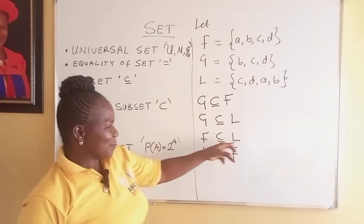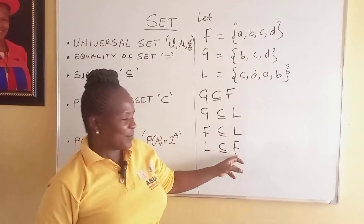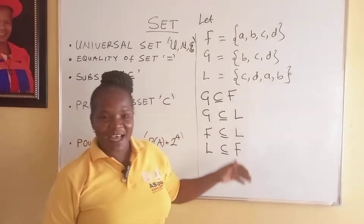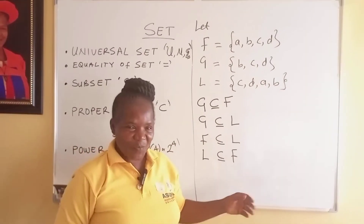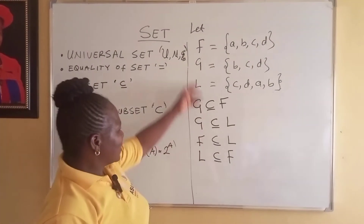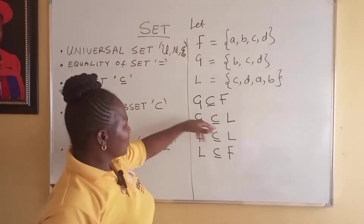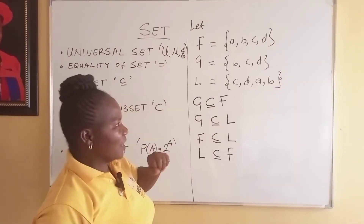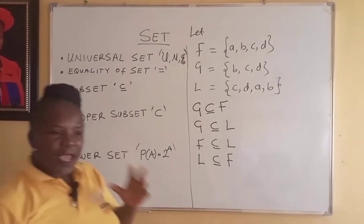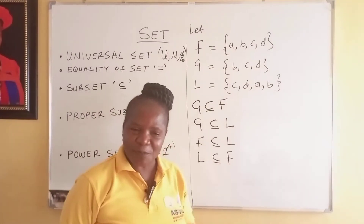F is a subset of L, and L is a subset of F — that tells you that F and L are equal. Now, G is a subset of both F and L. Now we have what we call a proper subset.